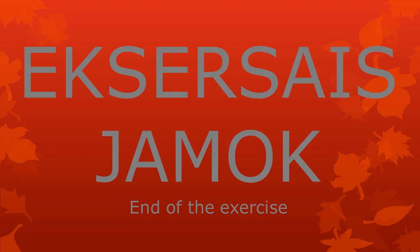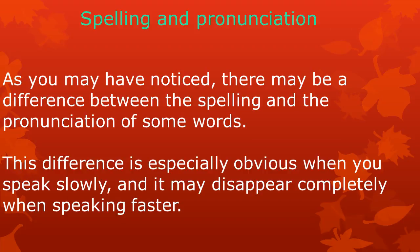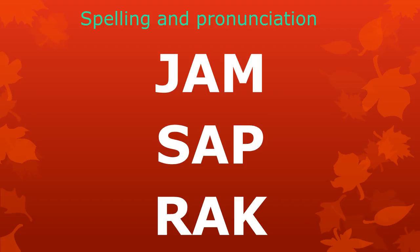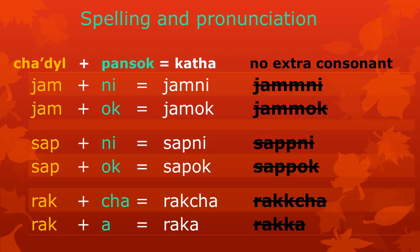As you may have noticed, there may be a difference between the spellings and the pronunciations of some words. These differences are especially obvious when you speak slowly and may disappear completely when speaking faster. We will focus on the words with a cha'dil, or roots: jam, sap, and rak. Here you see an analysis of the meaningful parts of the words jam ni, jamok, sap ni, sapok, rak cha, and rakka. All these words have two meaningful parts — namely a cha'dil followed by a pansok.